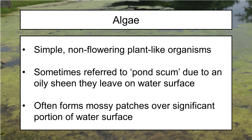We often refer to algae as pond scum due to an oily sheen they leave on the water surface. However, zooplankton — tiny microscopic non-plant organisms — can also be referred to as pond scum and can leave an oily sheen on the surface as well. Normally when they die, they'll leave that sheen sitting on top of the water where sunlight reflects off it in a kind of rainbow sheen. So it's important to understand if what you're looking at is algae or zooplankton.